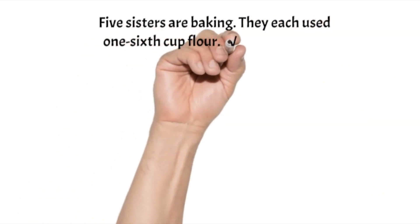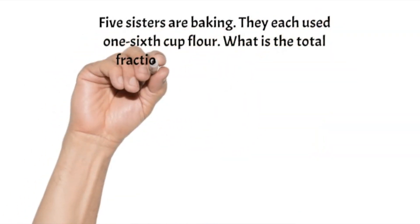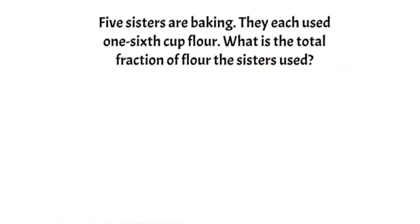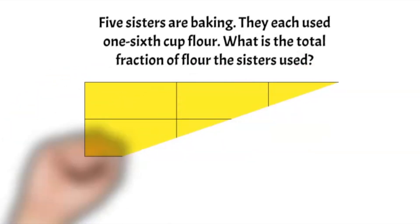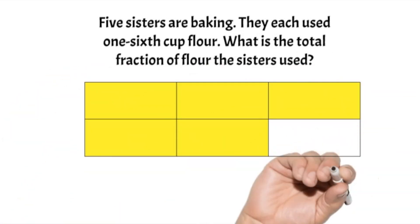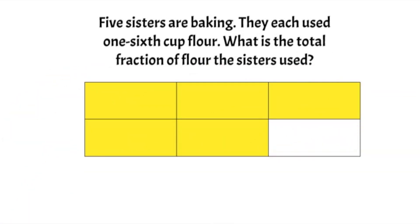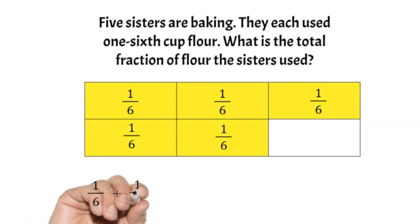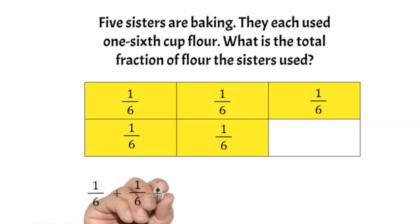Let's get started! Five sisters are baking — they each used one-sixth cup of flour. What is the total fraction of flour the sisters used? Let's draw a model to help us. We have a rectangle divided into six. There are five sisters and they each used one-sixth cup, so five parts out of six are shaded.